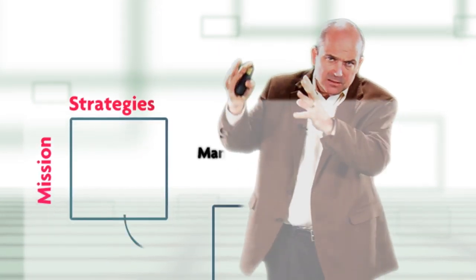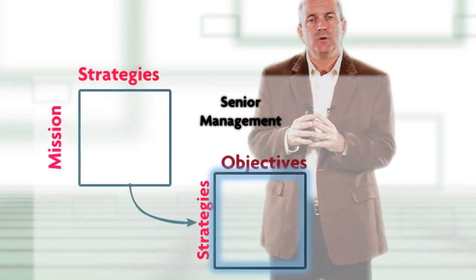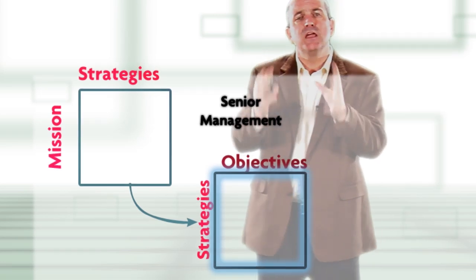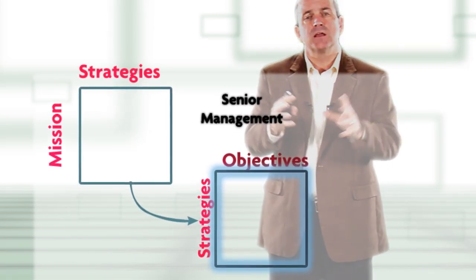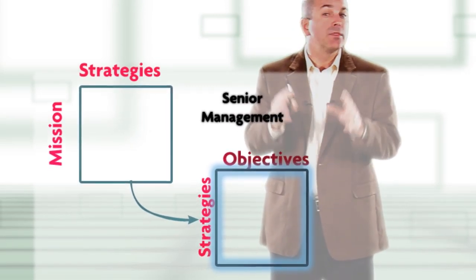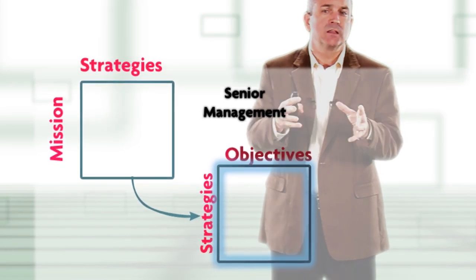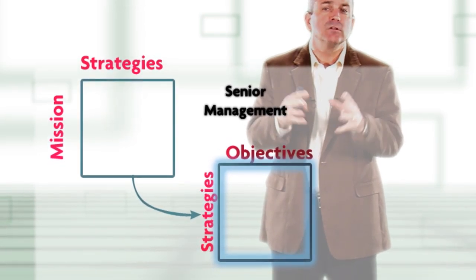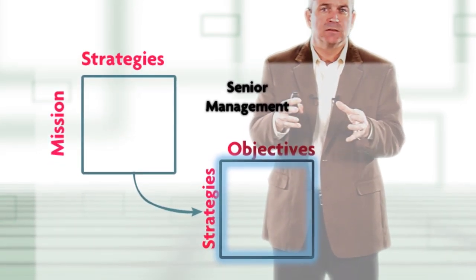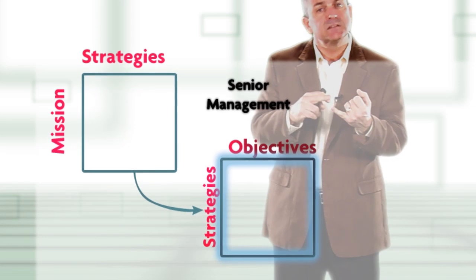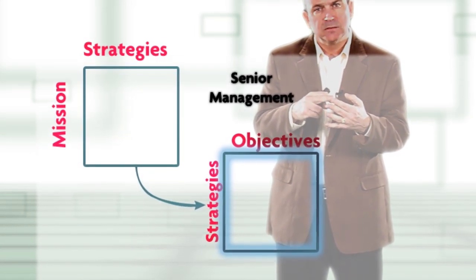We cascade the strategies down to the next level where we look at the relationship between the company-wide objectives. This might also include risk management objectives that resulted out of the SWOT analysis, where we identified strengths and weaknesses, opportunities, and threats.